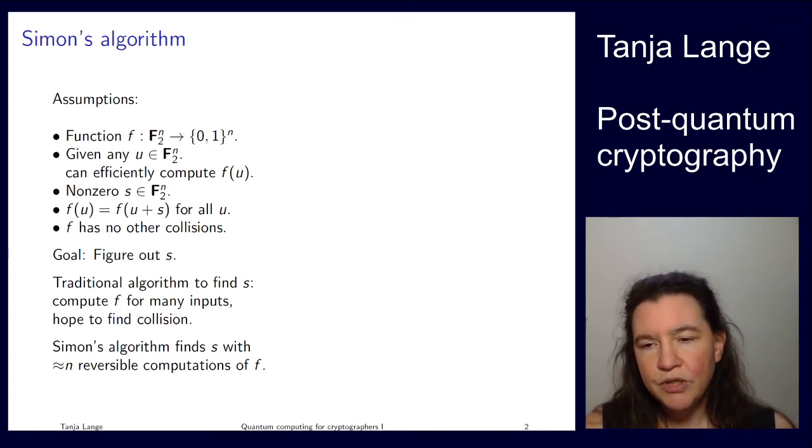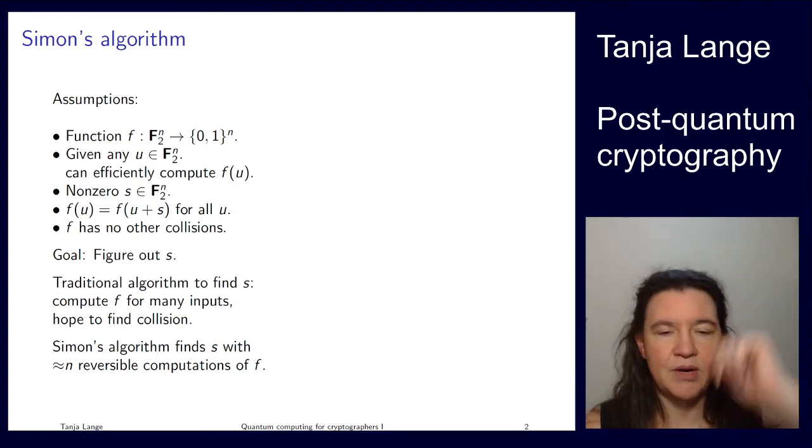This is the reversible computation, and it's a computation in quantum superposition, which means we have to build our gate and then throw the inputs through f.